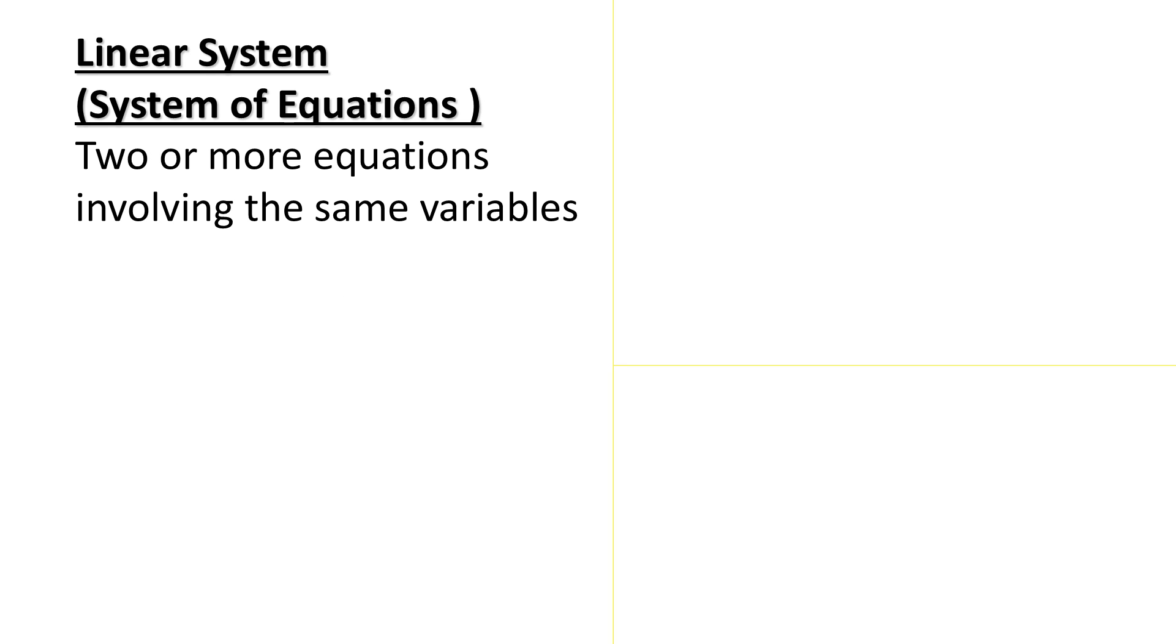A linear system, also known as a system of equations, is two or more equations involving the same variables. A lot of times you're going to see a brace outside the two equations to show that they're part of the same system.